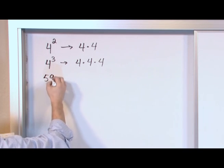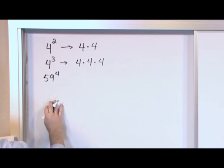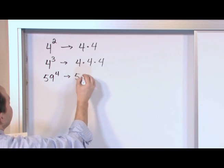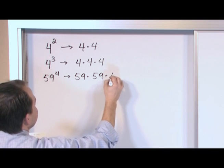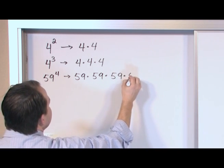It could be, you know, fifty-nine raised to the fourth power. And that would be fifty-nine multiplied by fifty-nine multiplied by fifty-nine multiplied by fifty-nine.